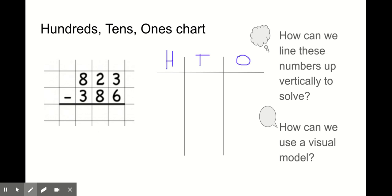823 minus 386. To make those hundred blocks, I need 8. Remember, they don't have to be perfect. And then I need 2 tens. And 3 ones. For 386, I need 300 blocks, 8 tens, and 6 ones.